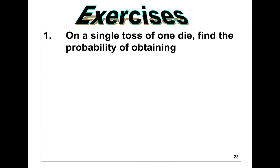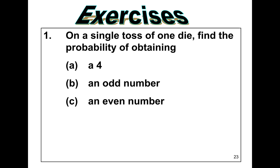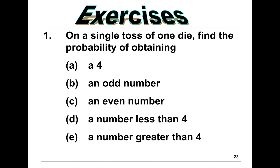For exercises, number 1: on a single toss of 1 die, find the probability of obtaining A) a 4, B) an odd number, C) an even number, D) a number less than 4, E) a number greater than 4, and F) an odd or an even number less than 4.